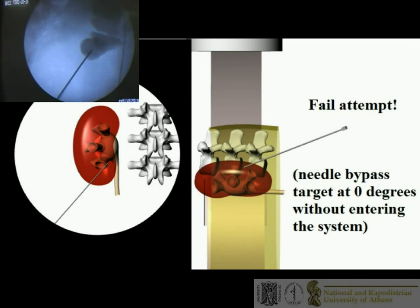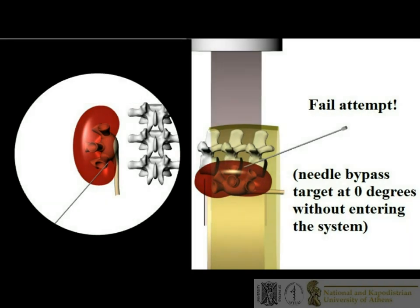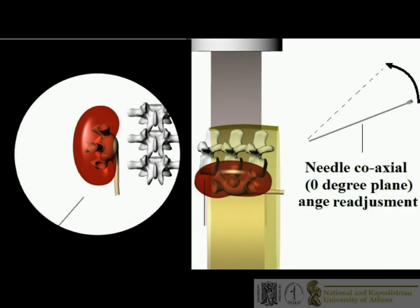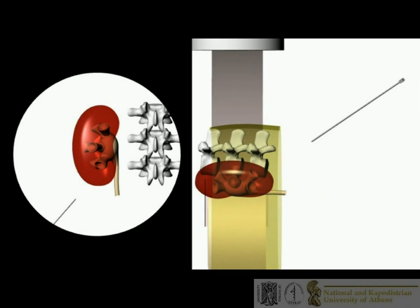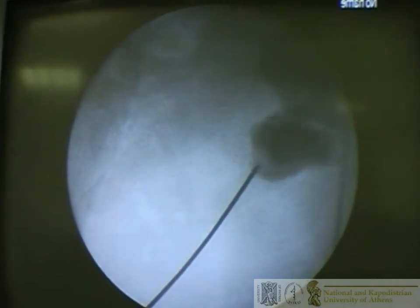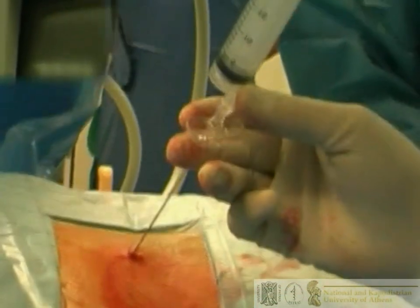Failure to access the calyx is recognized when the tip of the needle bypasses the target in fluoroscopic view without entering the system. The needle is then retrieved a few centimeters and its inclination is altered — more deeply or superficially — followed by a new attempt. The ability of the needle to move the calyx while in contact verifies that the correct depth has been achieved.